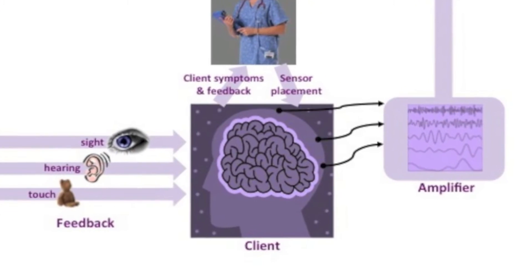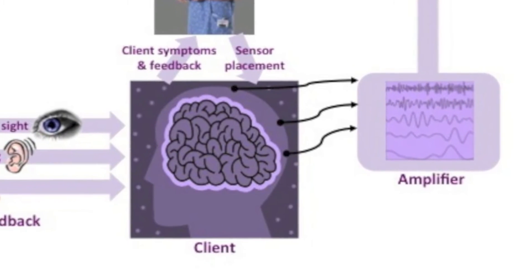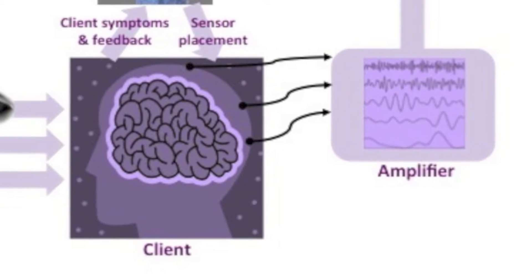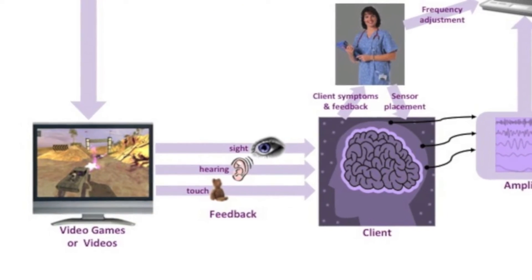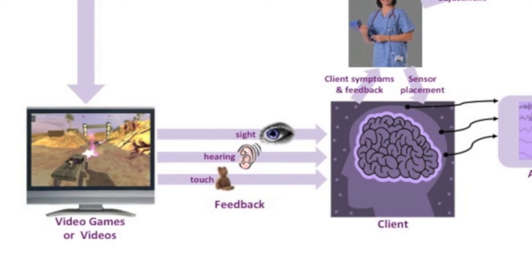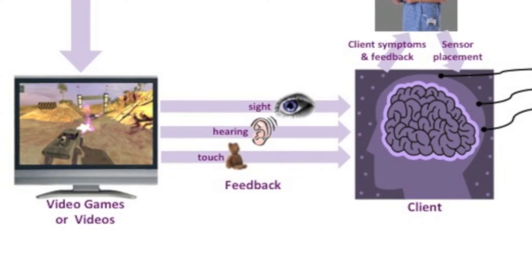we measure the brain's activity — so-called EEG activity. Our computer software will recognize if this activity is in the right state or not, and will then give your brain feedback on how well it's doing. The computer software does that by converting the brain's activity into video, audio, or tactile senses.